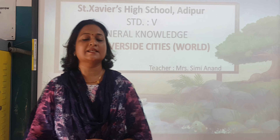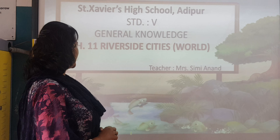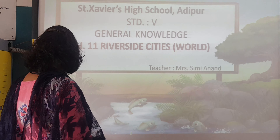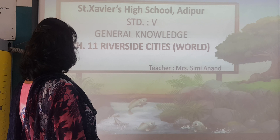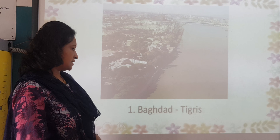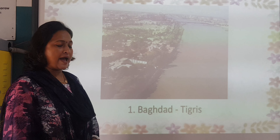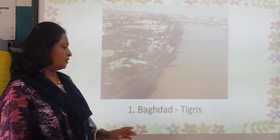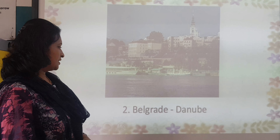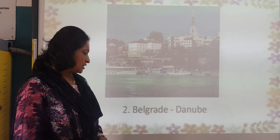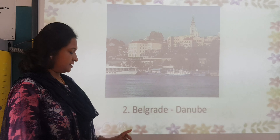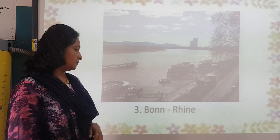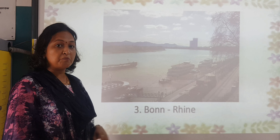Welcome to GK Classes. In this session we will be doing Chapter 11: Riverside Cities. The first one is Baghdad, located on the Tigris River. Next is the Danube River in Belgrade. This is a picture of the Rhine River, and it is in Bonn.